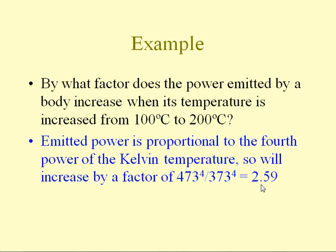100°C is about 373 Kelvin; 200°C is therefore 473 Kelvin. Take that ratio to the fourth power and you get a factor of about 2.6. An object at 200°C is emitting about 2.6 times the energy of an object at 100°C.